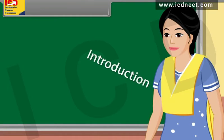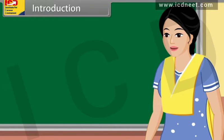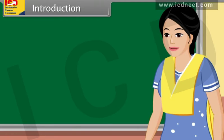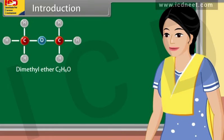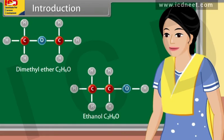Today we learn isomers and concepts used in organic reaction mechanism. The organic compounds which have same molecular formula but different configurations are called isomers. The examples of isomers are dimethyl ether and ethanol — they have the same molecular formula but different configuration.